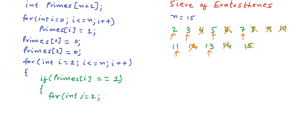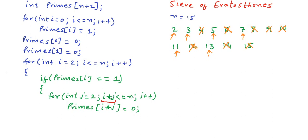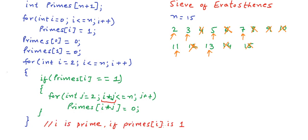We write an inner loop where j is the multiplier of i. The condition is that i*j ≤ n, incrementing j each time. Inside the loop we set primes[i*j] = 0. So in the first execution we set 2i to 0, then 3i to 0, and so on until i*j exceeds n. When we exit this loop, all non-primes will be struck off by having 0 at their index. Finally, if primes[i] is 1 then i is prime, giving us all the prime numbers up to n.